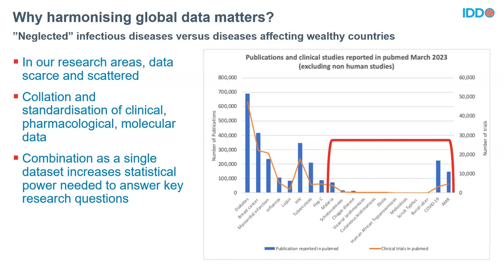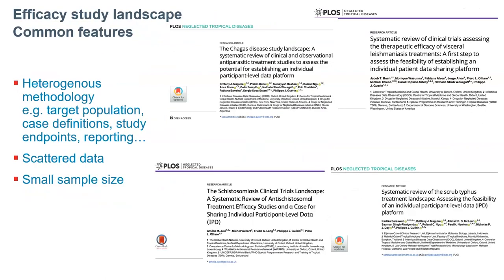The model is fairly simple, but the question is how you do that. This is a selection of systematic reviews that we have done in the context of drug efficacy, and when we try to measure, for all these diseases, how many trials exist in the world — which are actually the support for guideline treatment and evidence gathering — it's shocking.